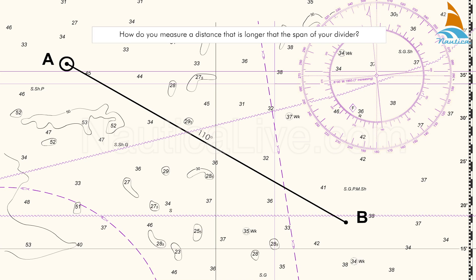The true course is 110 degrees and you want to know how many nautical miles it is from A to B. However, the distance to be measured is greater than the dividers span.